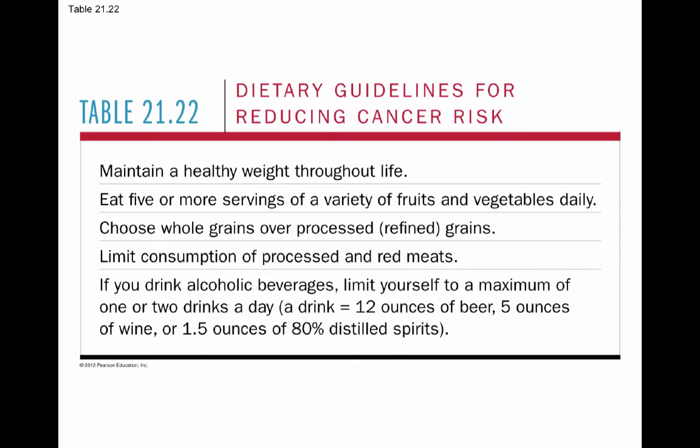General dietary guidelines for overall health and cancer prevention include maintaining a healthy weight, choosing lots of fruits and vegetables, eating whole grains instead of processed grains, and limiting red meat and processed meats. You don't have to cut them out completely, but avoid eating steak every day. If drinking alcohol, limiting to one or two drinks a day is recommended — and note that a standard serving of wine is only five ounces, which is less than most people pour.